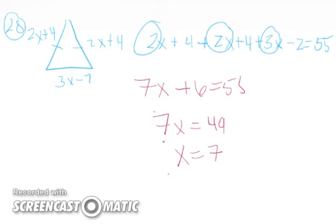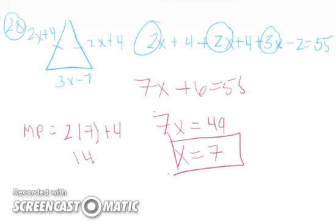And it didn't ask me to find just X, that was a piece of it, then it said find MP. Well MP is the 2X plus 4, so MP equals 2 times 7 plus 4. So that's going to be 14 plus 4, or MP equals 18.